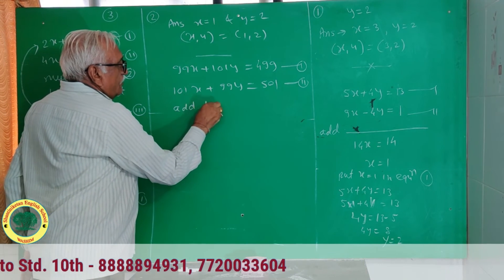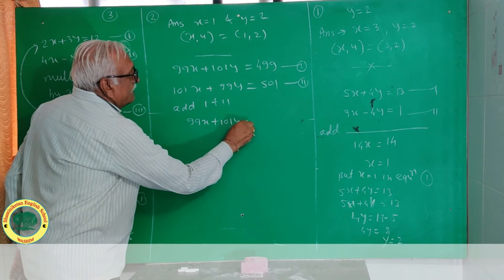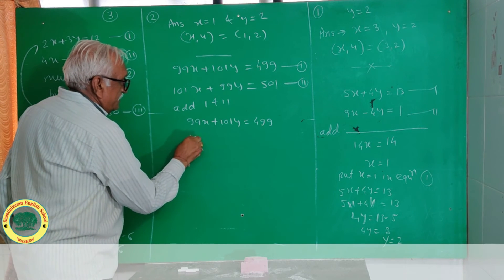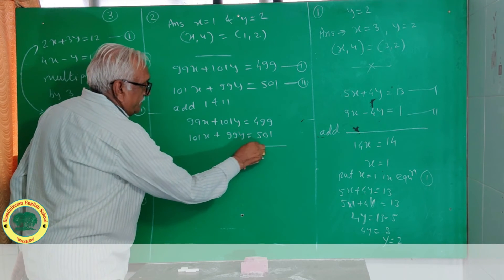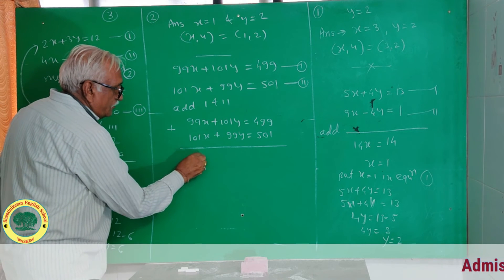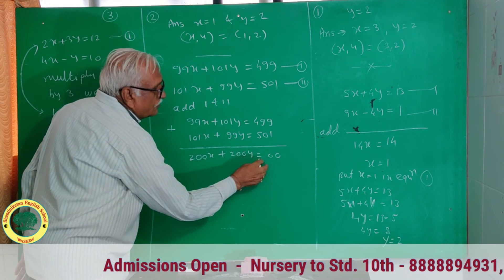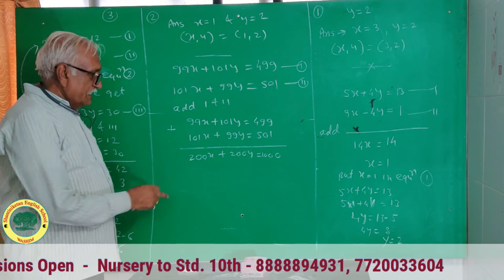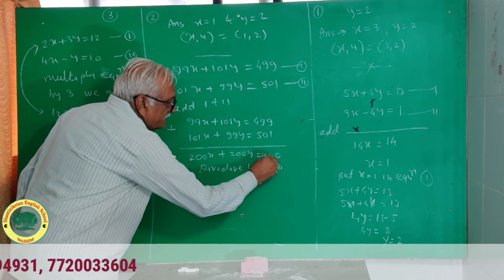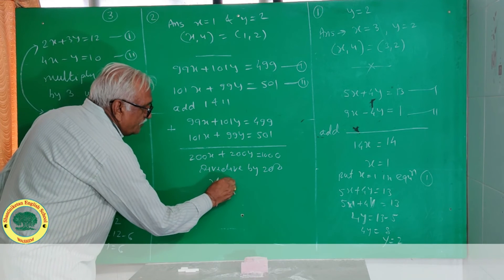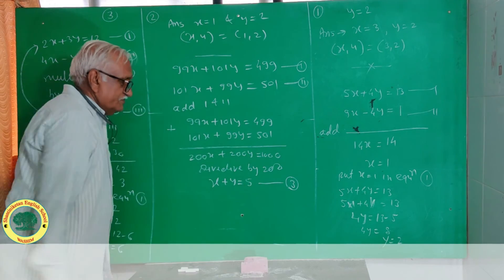Adding equations 1 and 2: 99x plus 101y equal to 499 and 101x plus 99y equal to 501. Adding gives 200x plus 200y equal to 1000. Dividing by 200, we get x plus y equal to 5 — equation 3.